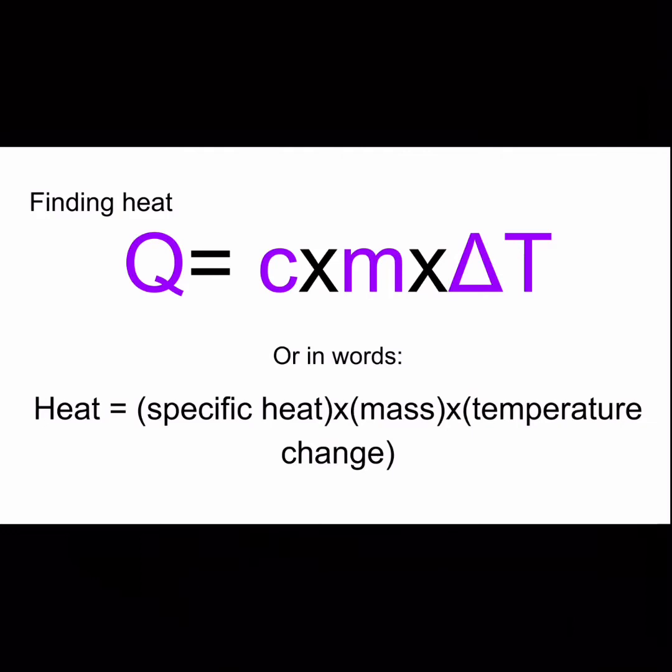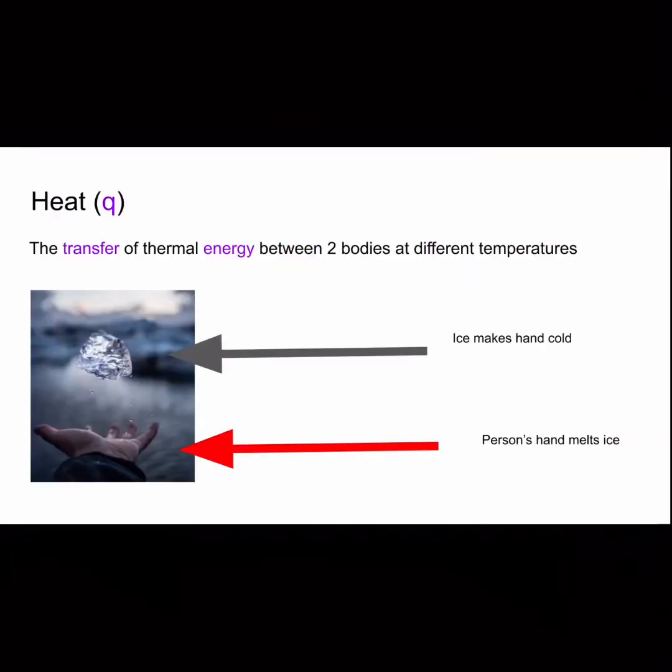Heat is represented by Q. It's the transfer of thermal energy between two bodies at different temperatures. Here's an example: ice makes your hand cold, but the person's hand is melting the ice. That is heat, there's a temperature change.